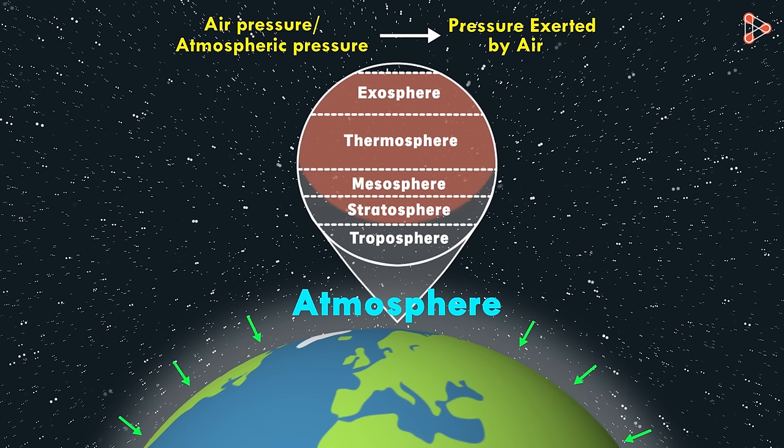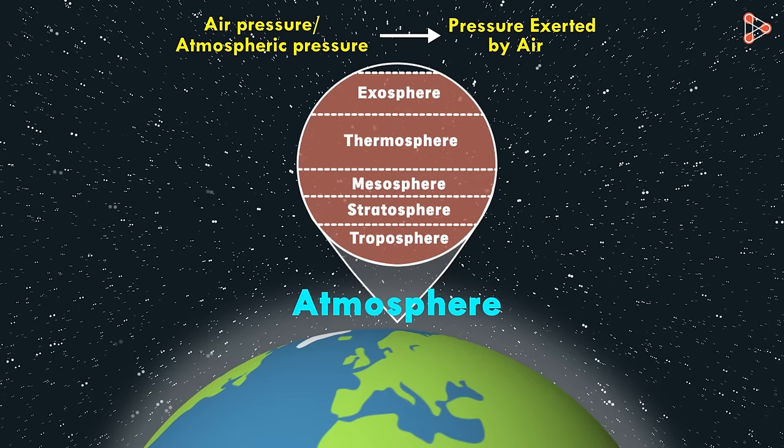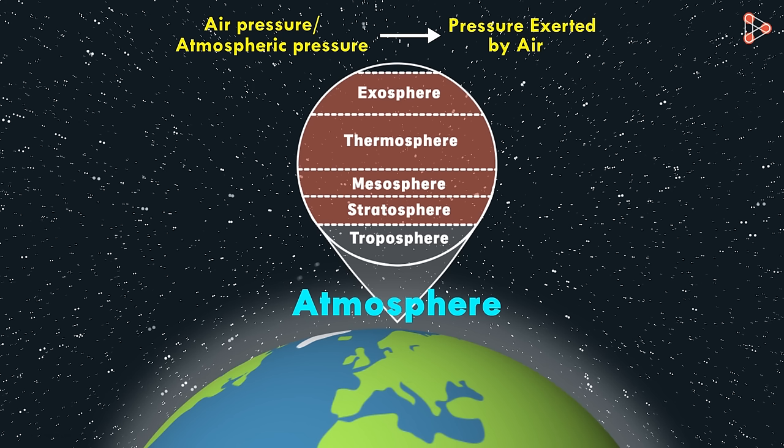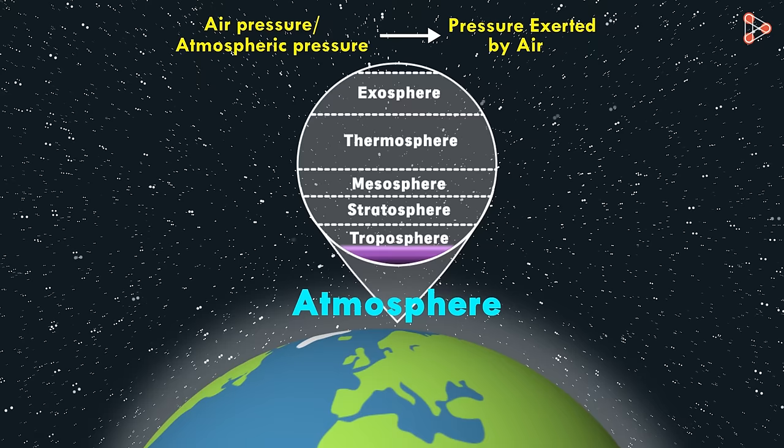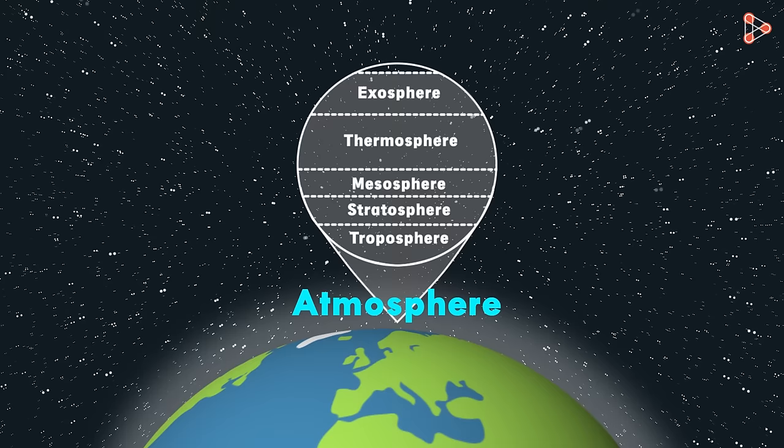Now the question is whether air pressure is uniform throughout these layers of atmosphere. Think about it. Where would the maximum quantity of air be? There is maximum air above troposphere. There's this much air above the troposphere, then this much air above the stratosphere, and this much above the mesosphere, and so on. So as we move upwards, the quantum of air decreases.